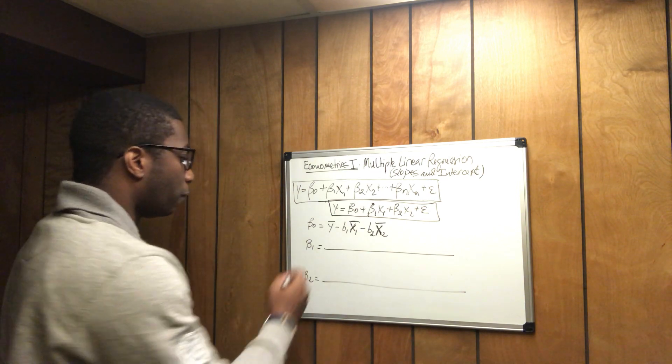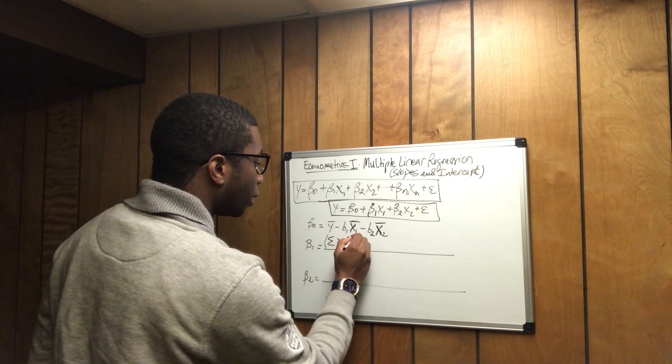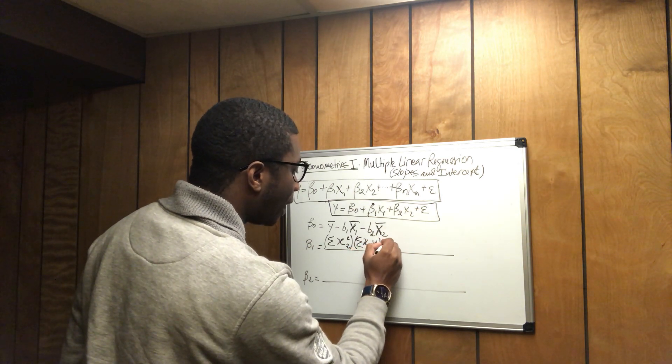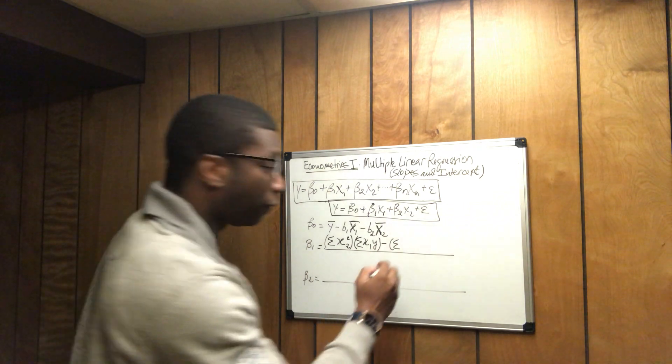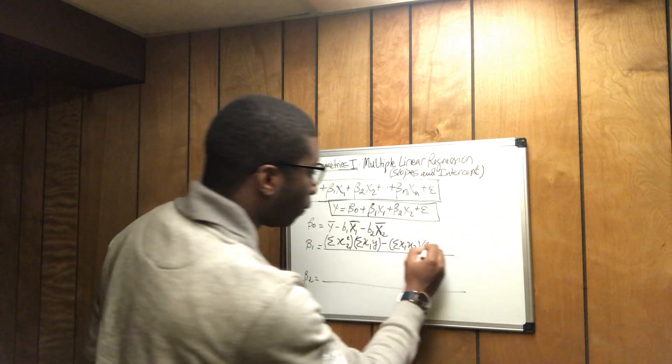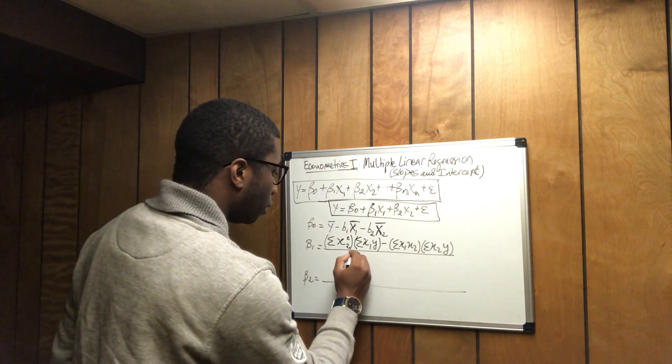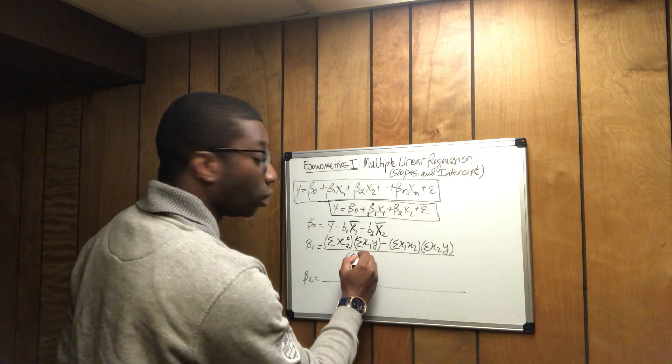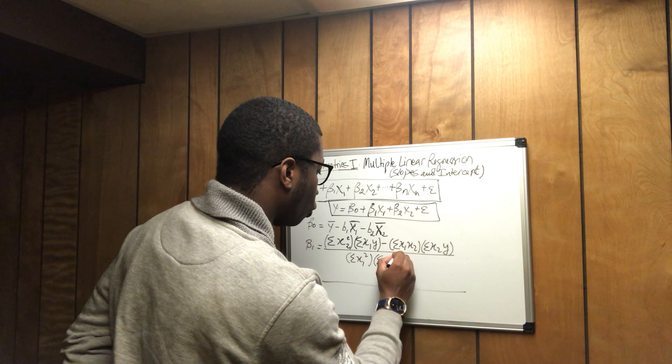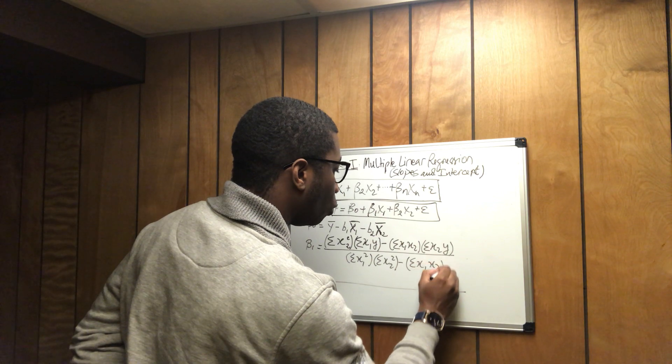We proceed simply by doing this. It is the summation of x2 squared times the summation of x1y minus the summation of x1 times x2 times the summation of x2y over the summation of x1 squared times the summation of x2 squared minus x1 times x2 squared.